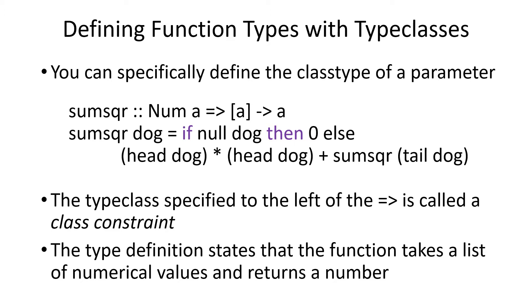You can define the parameter types and the return types using type classes. Here we say that the sum of square method has a parameter and a return type that is a number. It doesn't say whether it's a double, integer, or integral, or any other types. It's a number. And so it takes a list of numbers and returns a number.